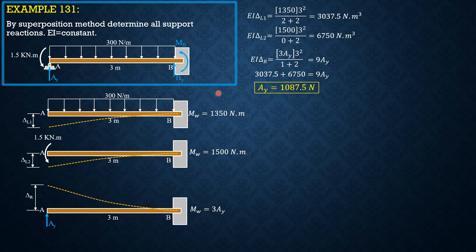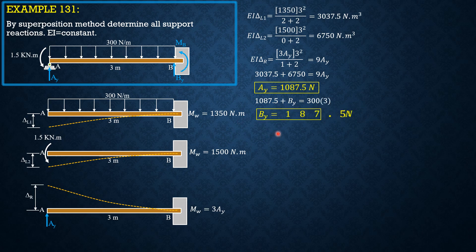Summation forces Y equals 0. 1,087.5 plus BY equals 300 times 3. So BY is equal to negative 187.5, so 187.5 Newtons downward.